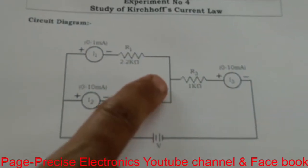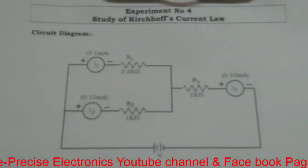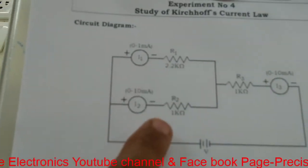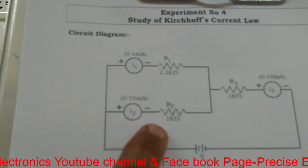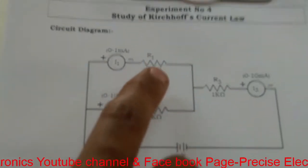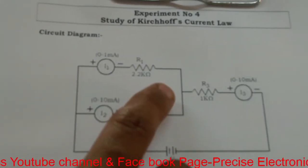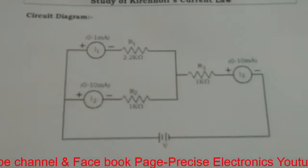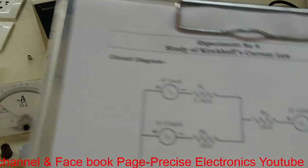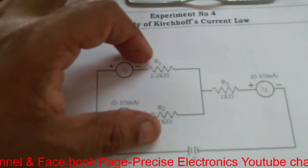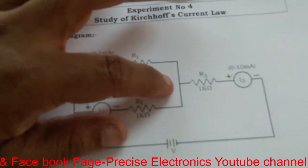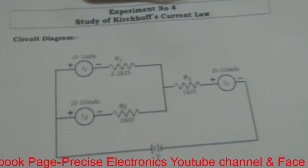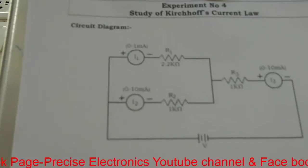At the junction, the current flowing through R1 is I1, and current flowing through R2 is I2 — these are the currents flowing toward the junction. The current flowing through R3 is I3, which flows away from the junction. We want to prove that I1 plus I2 must be equal to I3, the current flowing away from the junction.